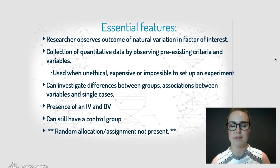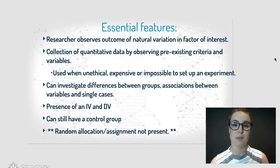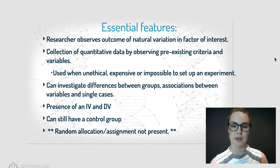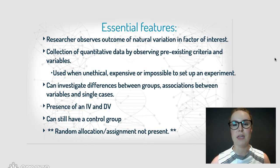The essential features of this investigation design: number one, the researcher observes the outcome of a natural variation in a factor of interest — that will make more sense once we've had a look at some examples in class. Number two, it involves the collection of quantitative data by observing pre-existing criteria and variables. Think about observing the number of cars on a road, or the number of red cars on a road — that criteria already exists and you are simply observing and recording it.